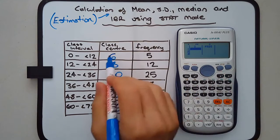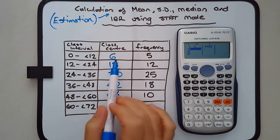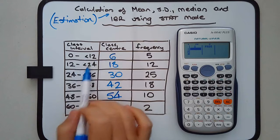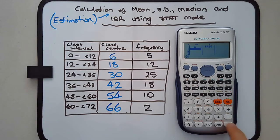Now we'll enter the class center as a score. It's not the exact score - we might not have gotten any sixes in the actual data - but it's the midpoint of the class interval. That's what we need to use. Let's fill that out first: 6, 18, 30, 42, 54, and 66.